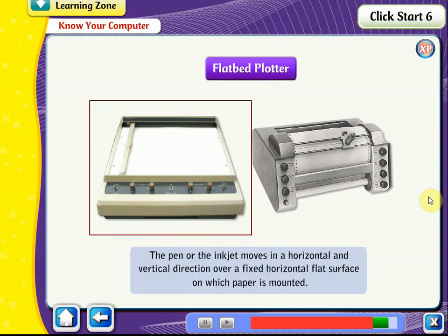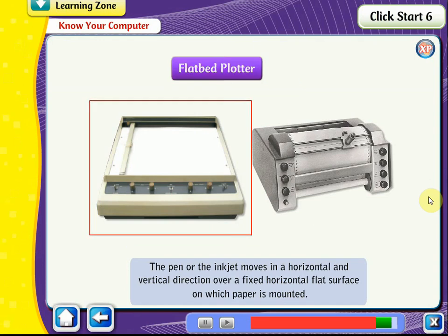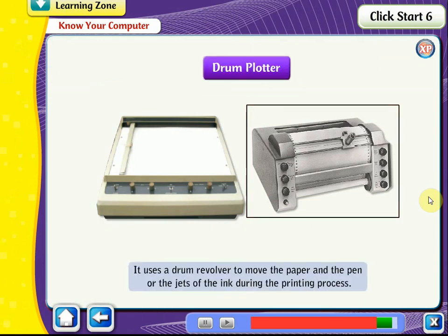A flatbed plotter moves the pen or inkjet in horizontal and vertical directions over a fixed horizontal flat surface on which paper is mounted. A drum plotter uses a drum revolve to move the paper, and the pen or ink jets are used during the printing process. The paper is placed over the drum, which is then rotated, and the pen moves along horizontal or vertical directions to print the output.